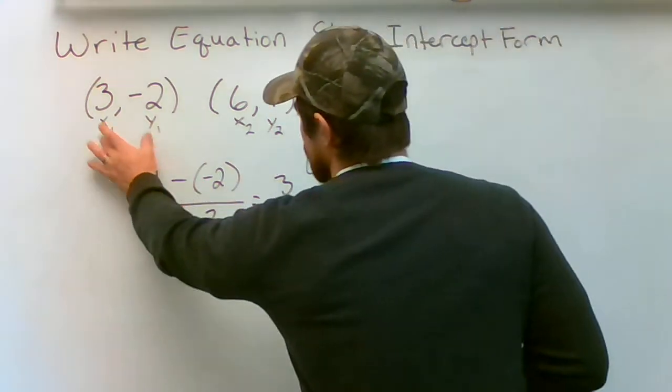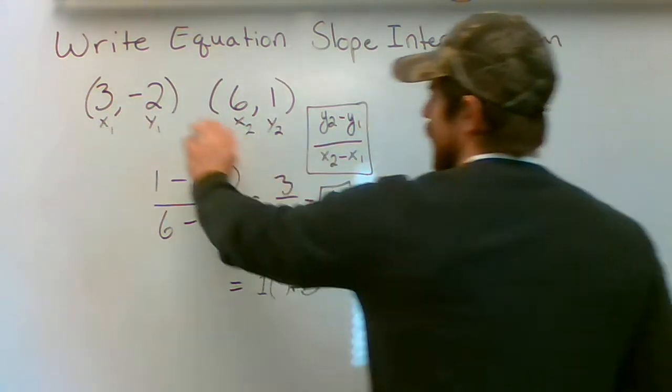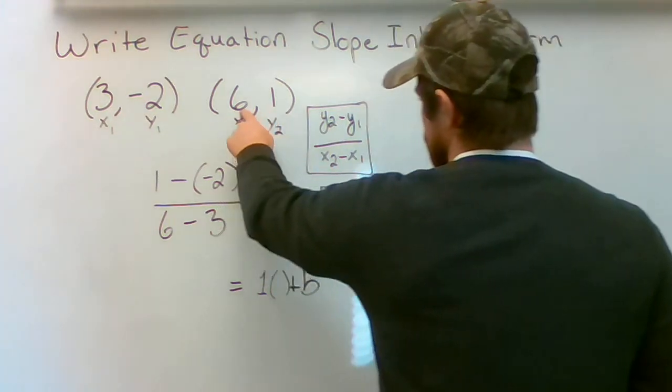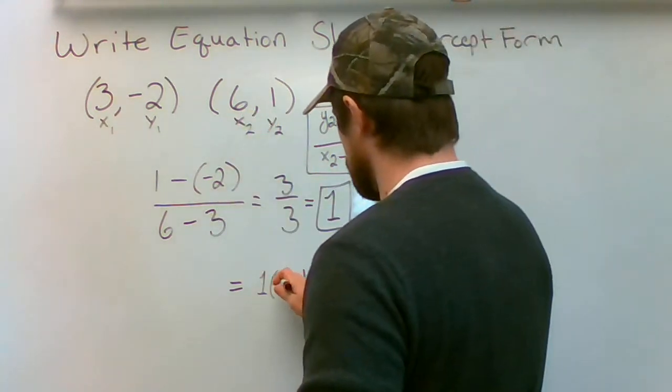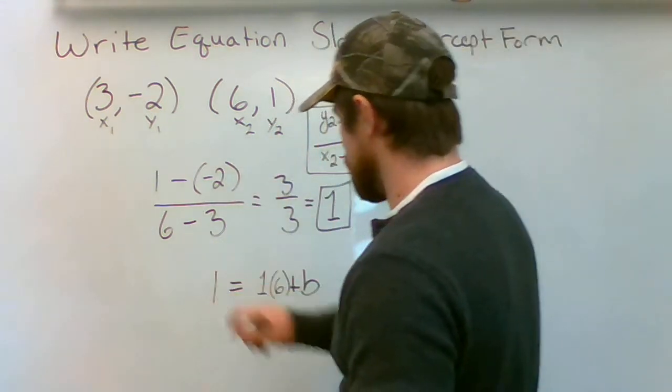Okay, where am I going to get an xy? I can use these two values or I can use these two values. I don't like dealing with negatives if I can avoid them so I'm going to use 6, 1. 6 is my x so that's going to go right there. 1 is my y that's going to go right there.